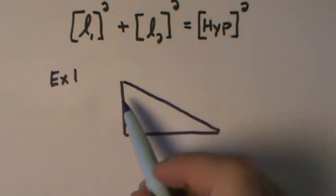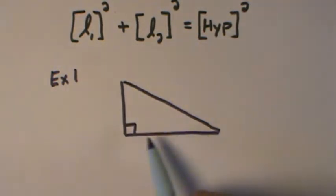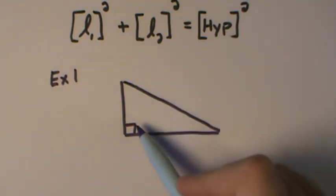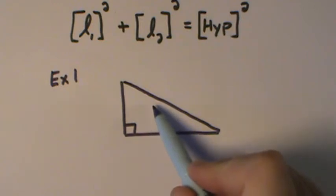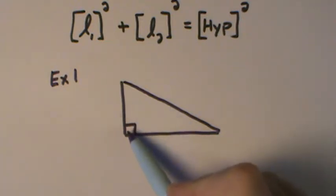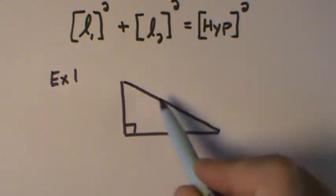The legs are always the two sides that help form the right angle. If you recall from previous lessons, the hypotenuse is the side that the right angle basically points to. If you think of that as an arrow, it points to the hypotenuse.